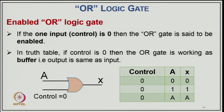The enable OR logic gate: if one input (control) is 0, then the OR gate is said to be enabled. When the control input is 0, the OR gate works as a buffer — the output is the same as the input. If A=0, output is 0; if A=1, output is 1. Whatever the input, the same is the output.